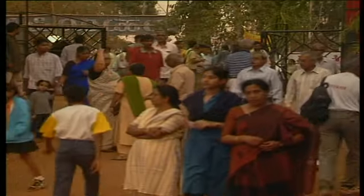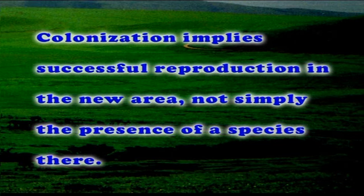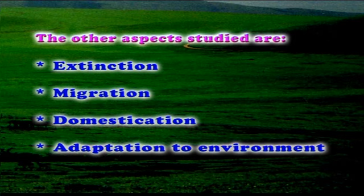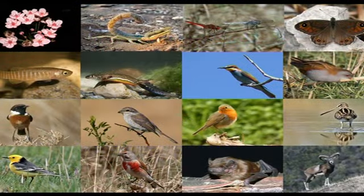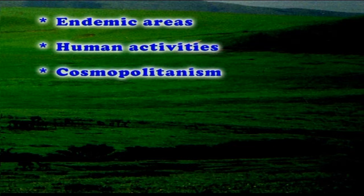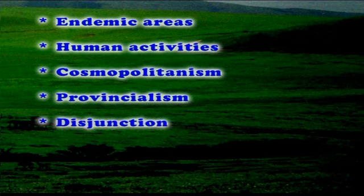Colonization refers to the establishment of a population in a place formerly occupied or unoccupied by the species. Colonization implies successful reproduction in the new area, not simply the presence of a species there. Other aspects studied include extinction, migration, domestication, and adaptation to environment. Areas concentrated in biogeography include gene centers and endemism, where the word endemic describes a taxon restricted to and native to a particular area. The endemic areas, human activities, cosmopolitanism, provincialism, disjunction, biotic interchange, divergence, and convergence are all studied in biogeography.